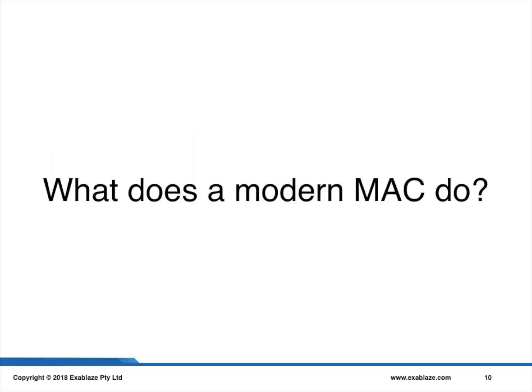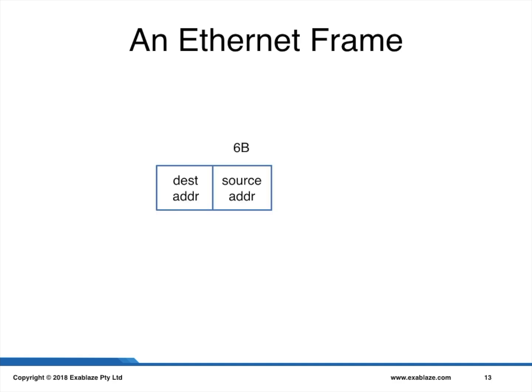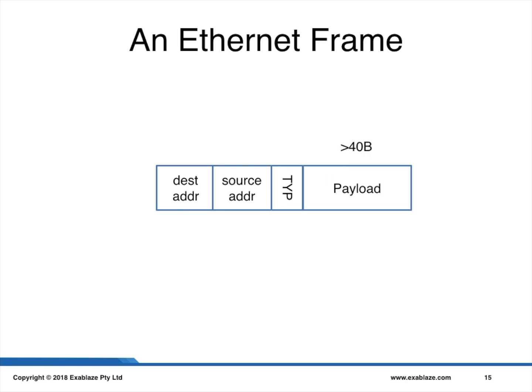The easiest way to understand this is to look at an Ethernet frame. Typically, an Ethernet frame would contain a destination address, a source address, an Ether type, and some kind of payload. Enclosing that would be the frame check sequence, or CRC.